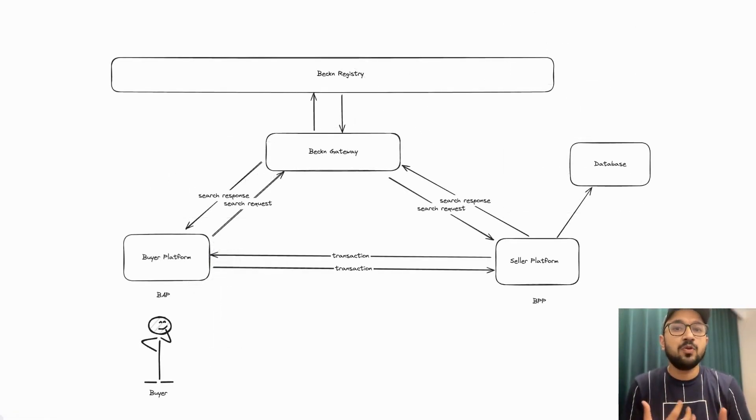A buyer will come to a BAP application with an aim to buy a cake. BAP is now scared. It does not have a cake to sell. But wait, BAP is a part of ONDC network. BAP thinks, let's send a request to the gateway asking if the gateway knows where I can find a cake nearby. BAP knows how to talk to the gateway due to the common language defined by the Beckon protocol.